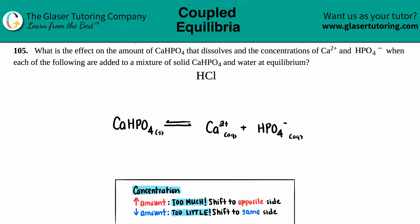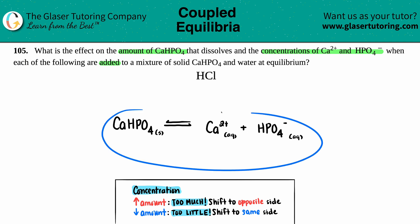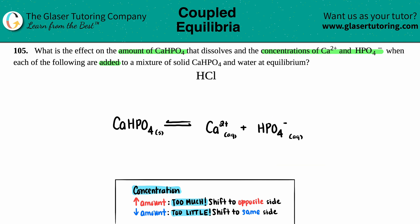Number 105. What is the effect on the amount of CaHPO4 that dissolves and the concentrations of Ca2+ and HPO4²⁻ when each of the following are added to a mixture of solid CaHPO4 and water at equilibrium? I already wrote down the balanced equation for what's going on with CaHPO4 and Ca2+ and HPO4²⁻. If you want to know where this came from, check out 105A — that's where I go into depth on how this equation comes to be. So we're just going to get right into it.